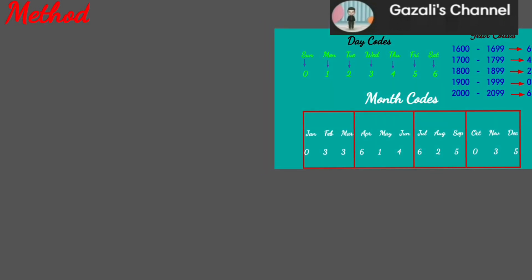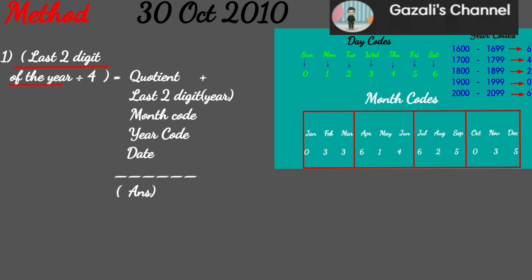Let me explain the example: 30 October 2010. I will do two steps. Step 1: take the last two digits of the year — 10 divided by 4 equals 2.5, take 2. Plus last two digits: 10. Month code — October code. Year code. Date: 30.